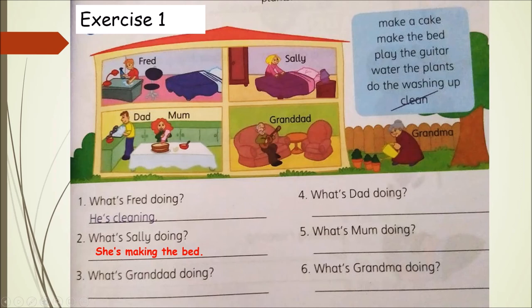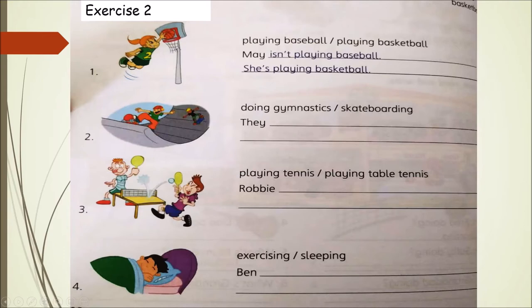So this one, I'll let you try. Exercise 2: you look at the picture. What's the girl playing? She's playing basketball. There are two phrases given — number one: playing baseball, number two: playing basketball.